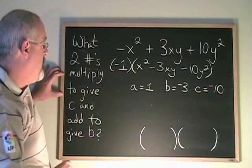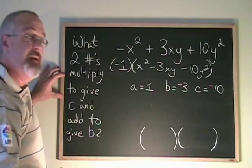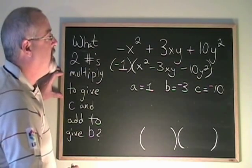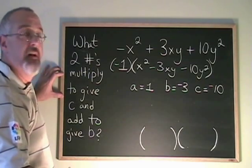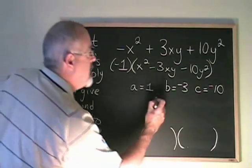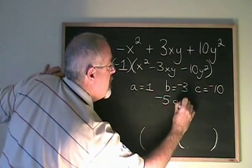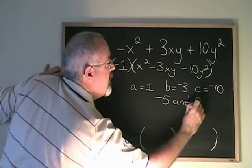Asking my question, what two numbers multiply to give c and add to give b, means I am asking what two numbers multiply to give negative 10 and add to give negative 3. Those two numbers are negative 5 and 2.